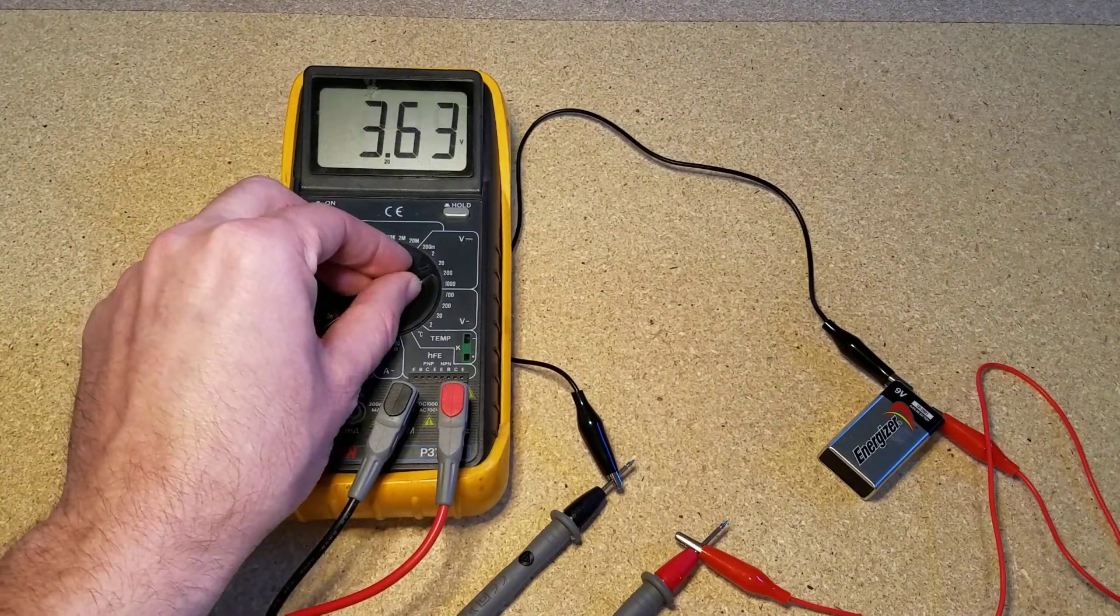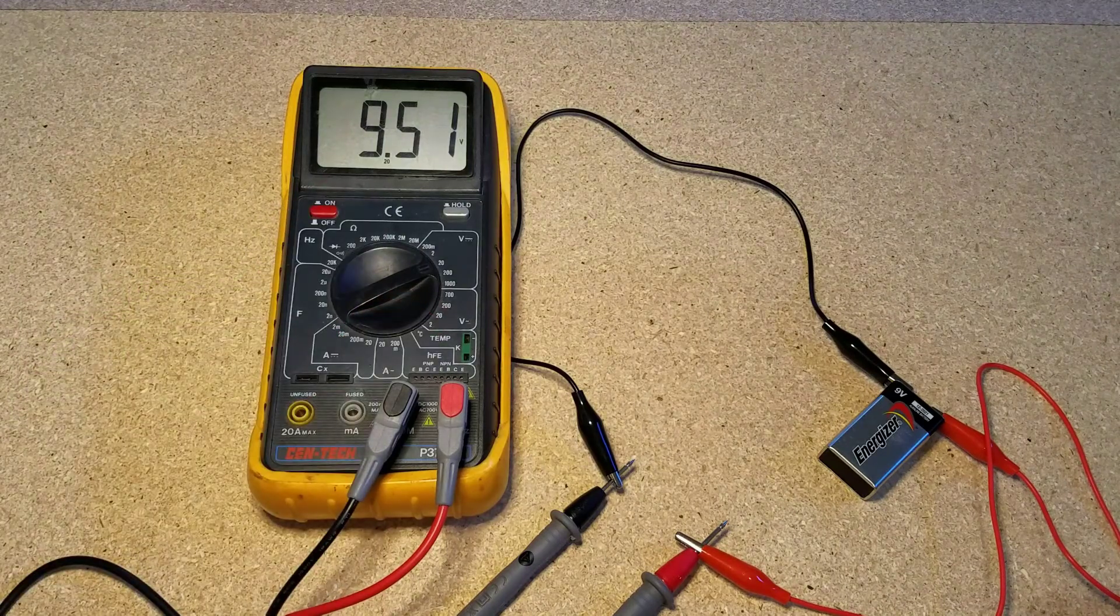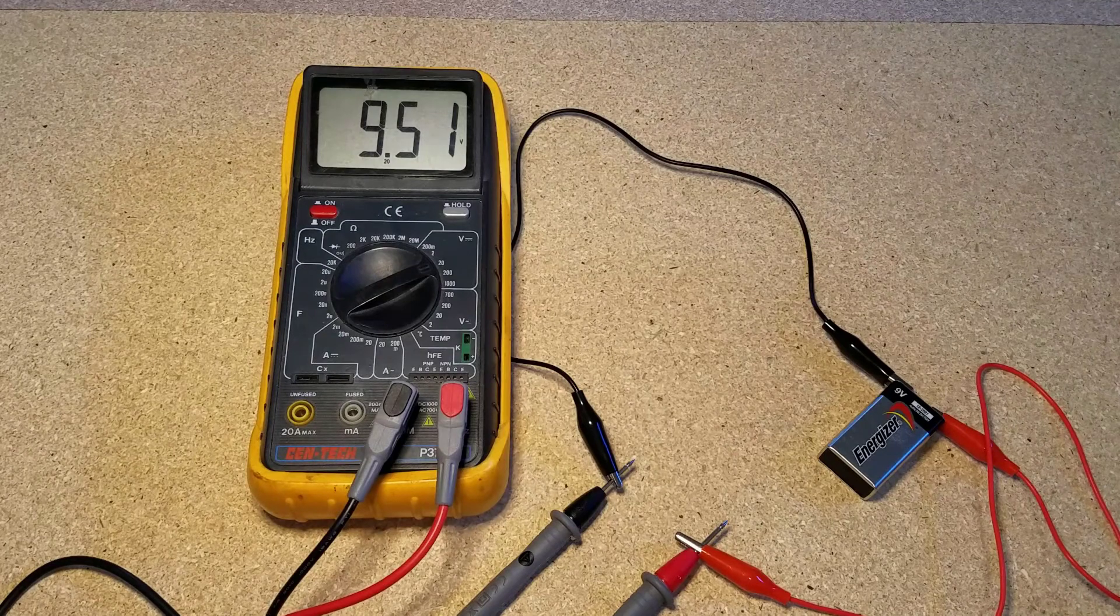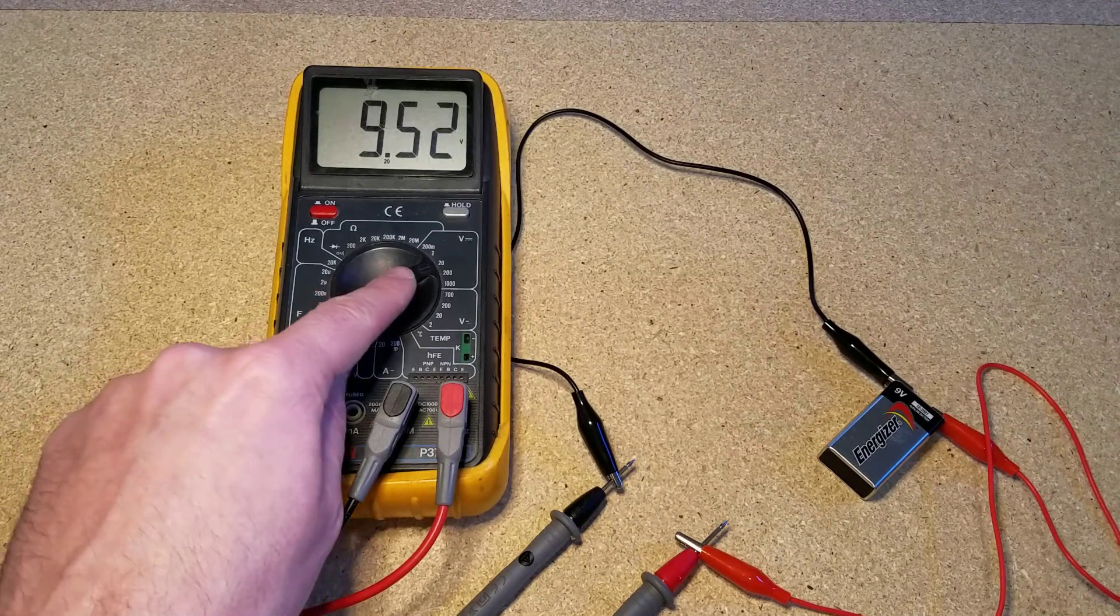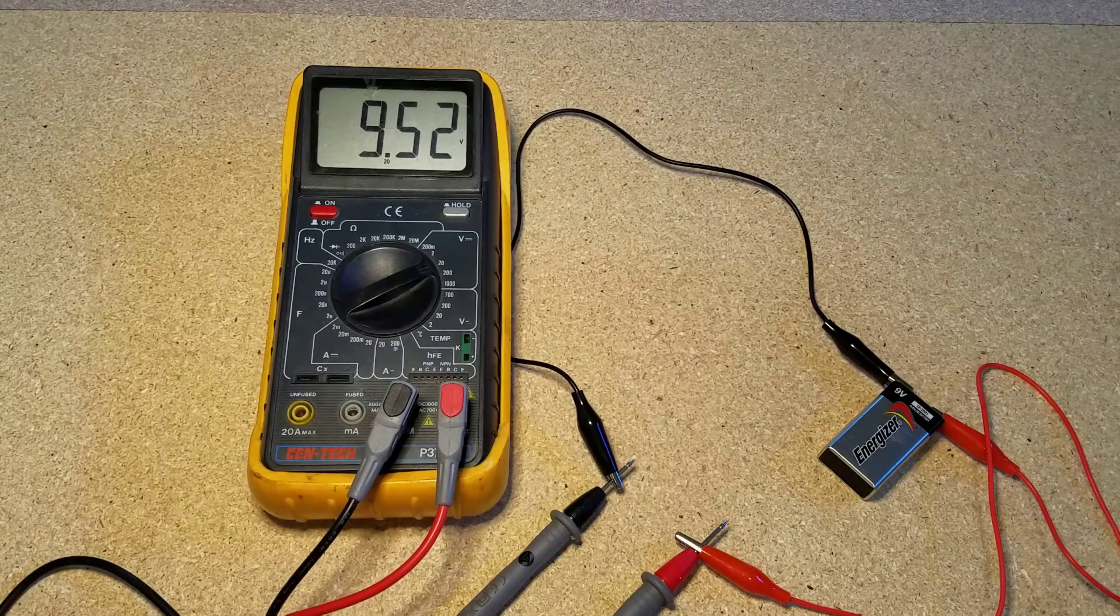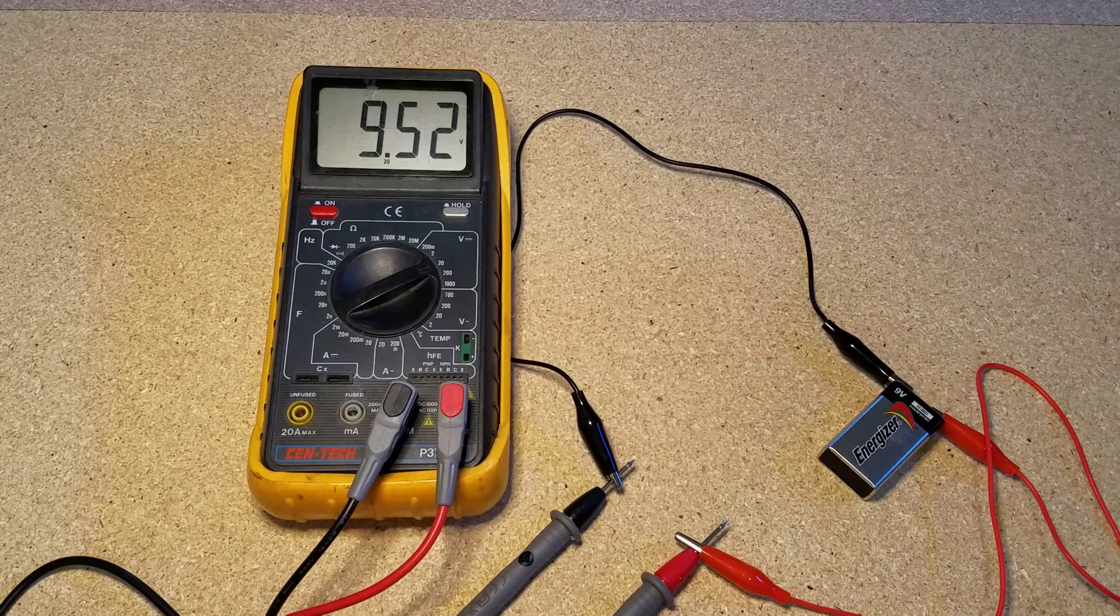So this gives us the most accurate reading that we can get with this meter and you don't really want to go any farther into the 2 volt or the 200 millivolt range because those are below the range of the voltage that we're measuring. So now that we know how to set up our meter, let's head over to the car and see it in action.